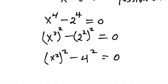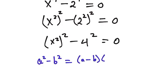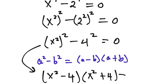Recall that a squared minus b squared equals (a minus b)(a plus b) — that is the difference of two squares. Applying that here, we get (x squared minus 4)(x squared plus 4) equals 0.